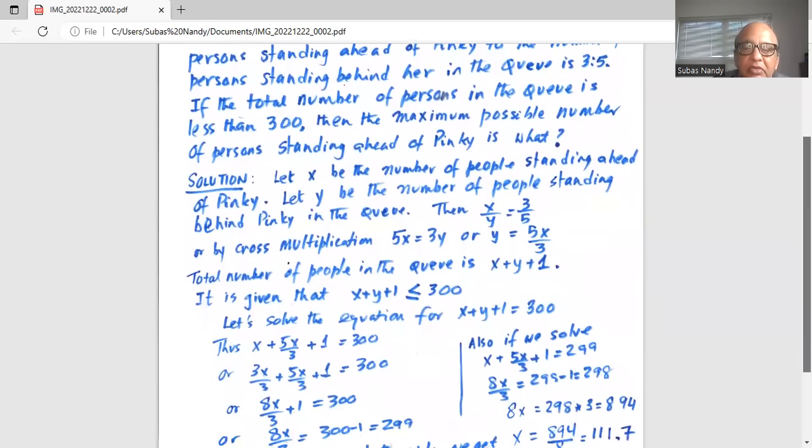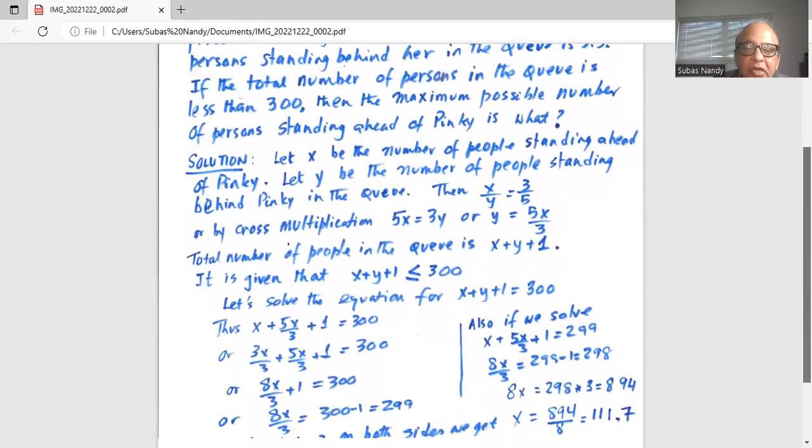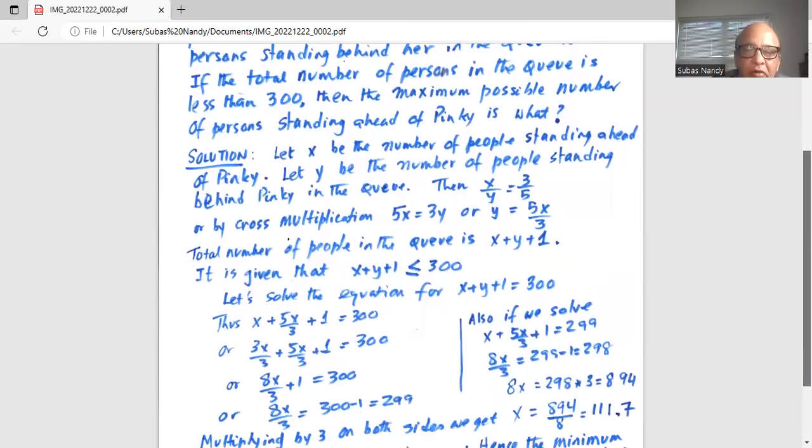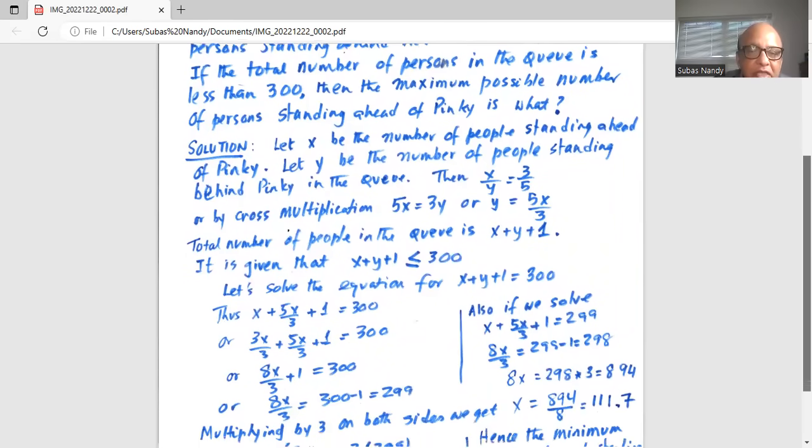Let's solve for the equation x plus y plus 1 equal to 300. For y we can write 5x by 3. So x plus 5x by 3 plus 1 equal to 300.